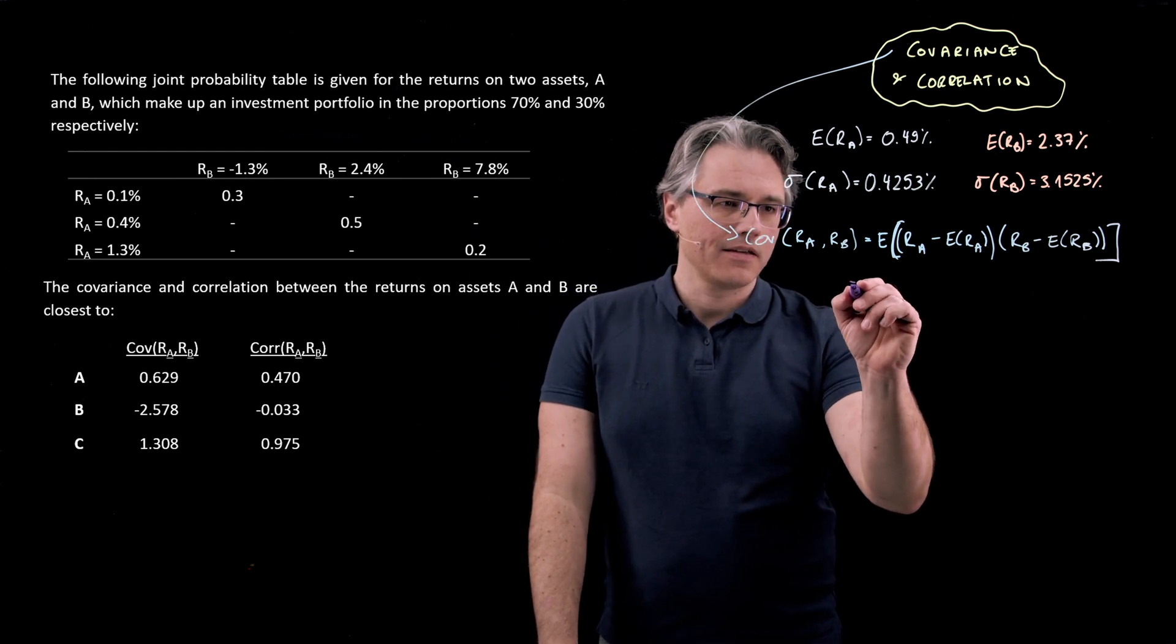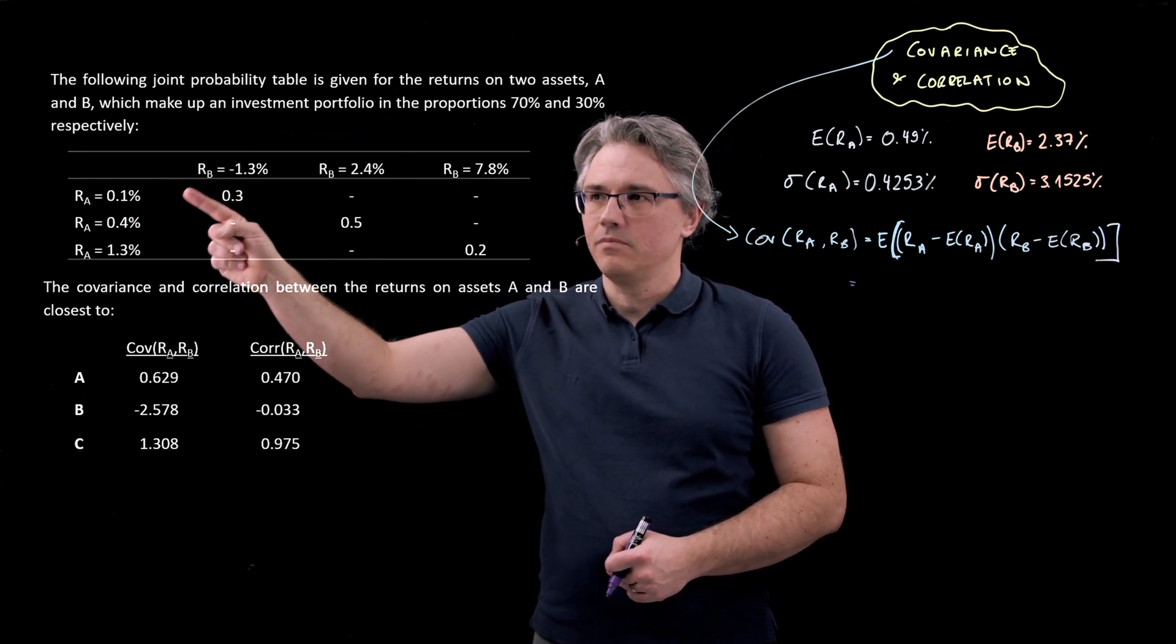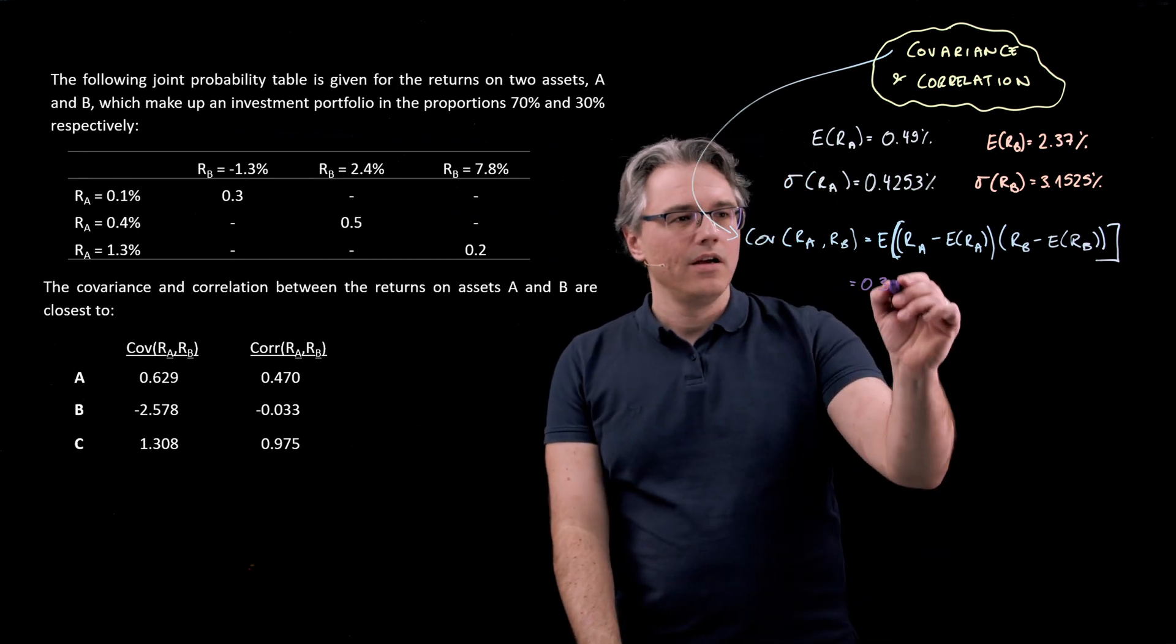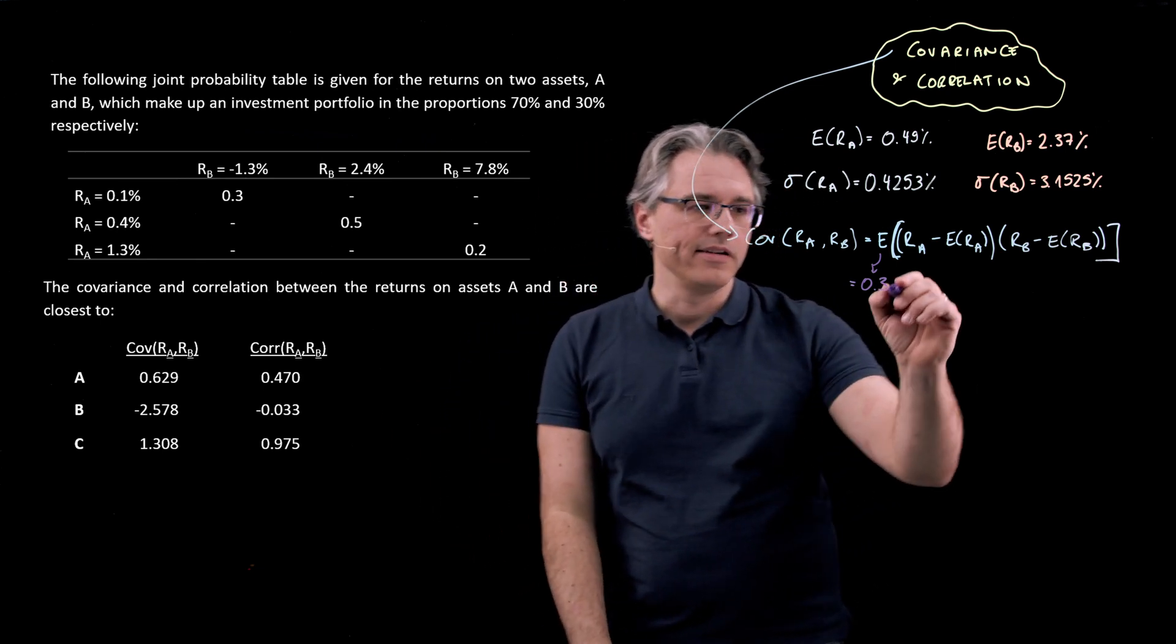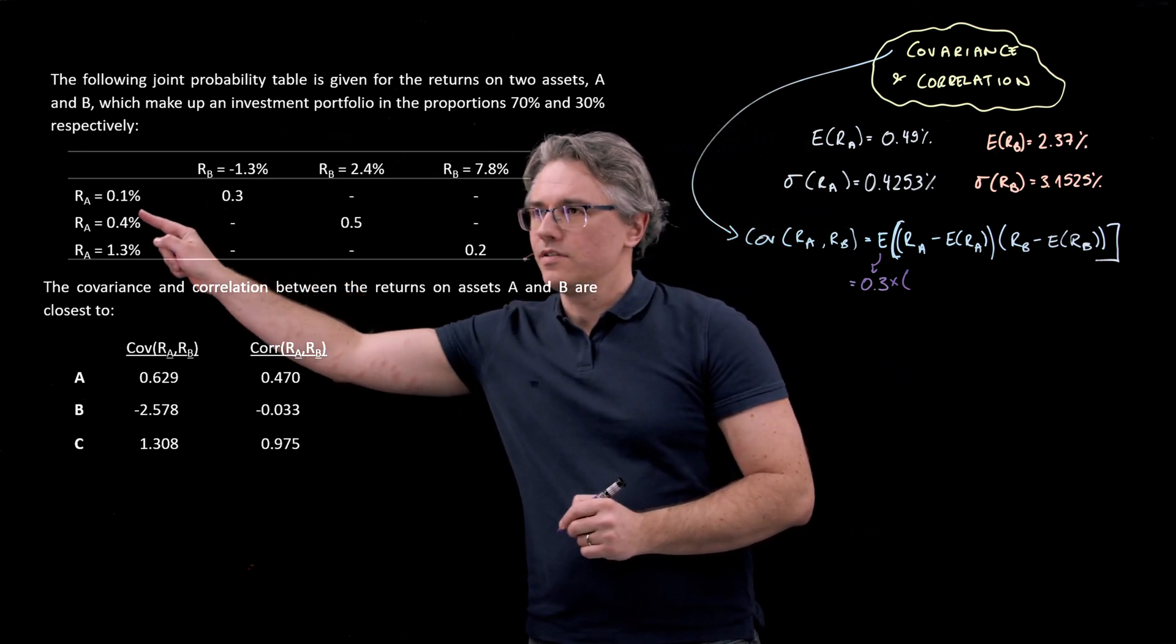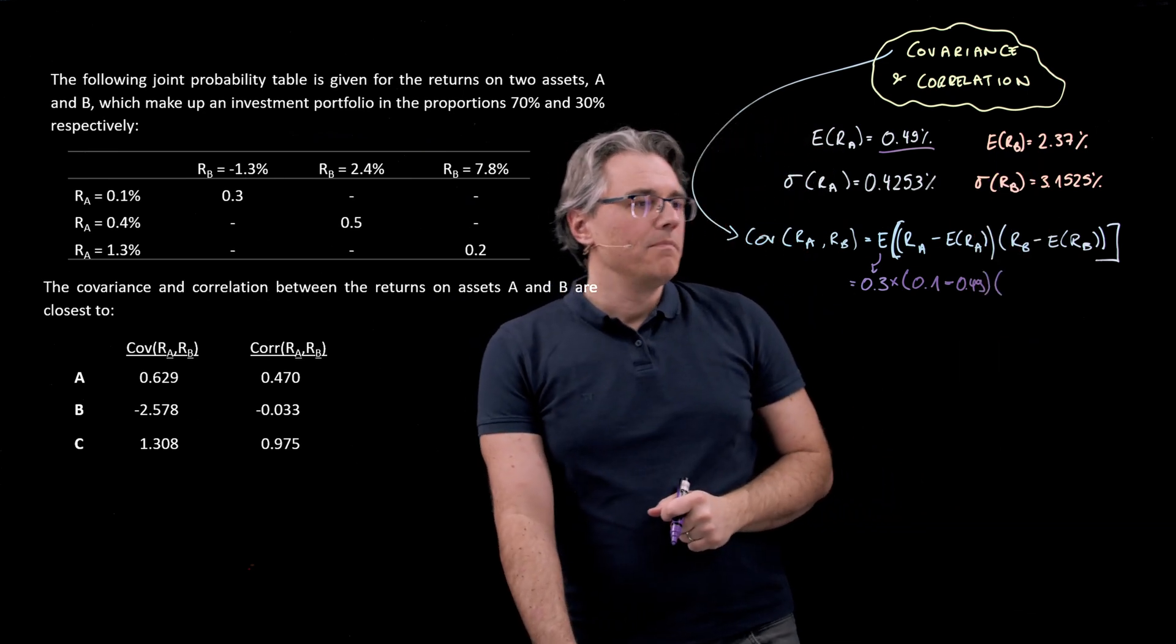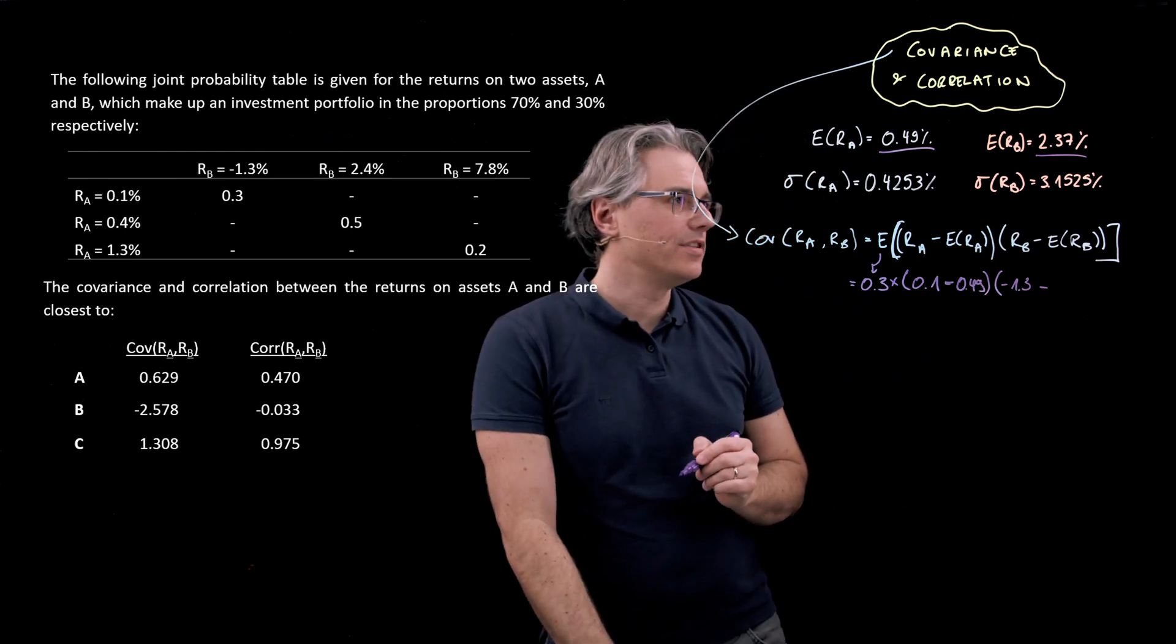How is this going to work with actual values? What we'll need to do is take the values taken on by A and at the same time taken on by B, and bear in mind what the probability of that set of returns occurring actually is. In the first instance, with a probability of 30%, hence 0.3, and that deals with the expected idea because we're going to weigh everything by the relevant probability of it occurring. We've got a situation in which asset A takes on a value of 0.1, that's the return of A, minus its expected return, which is 0.49, multiplied by the fact that at the same time B has taken on a value of -1.3, and we deduct its expected return, which was 2.37.